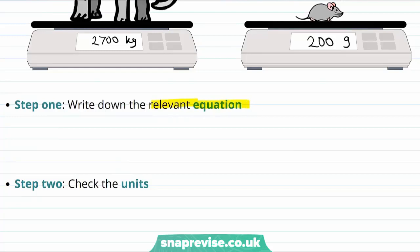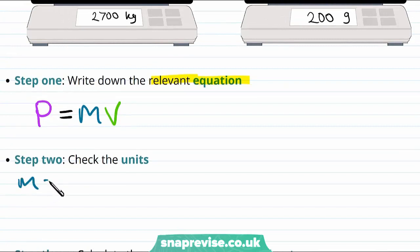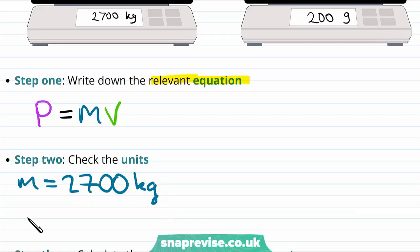We're being asked to calculate the momentum. So the equation we're going to need is the one that we wrote down on the last page for the momentum. And that equation says that the momentum is equal to the mass multiplied by the velocity. Our next step is to check the units we've been given. We were told that the elephant has a mass of 2,700 kilograms, which is already the correct units for mass.